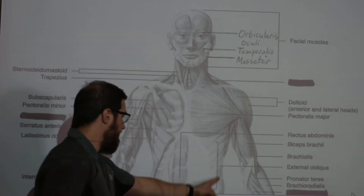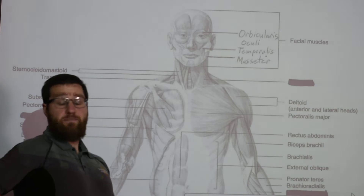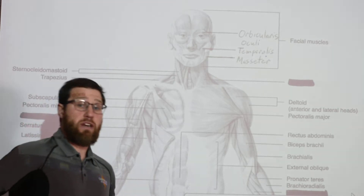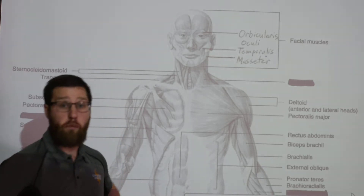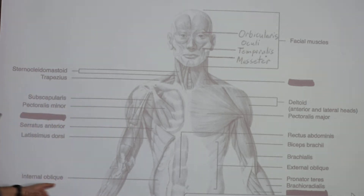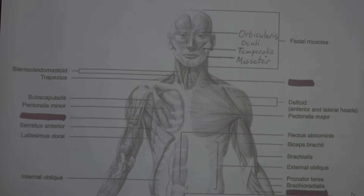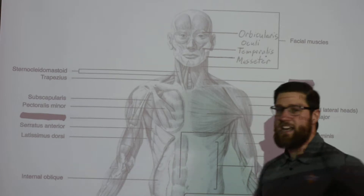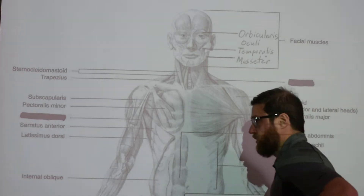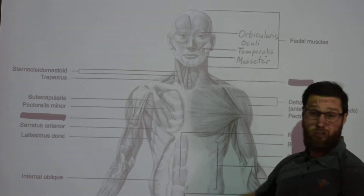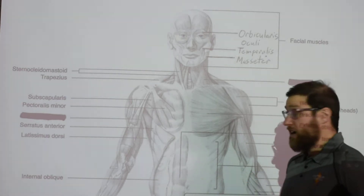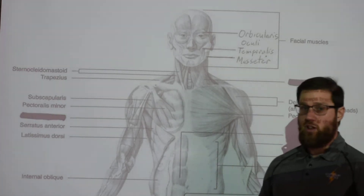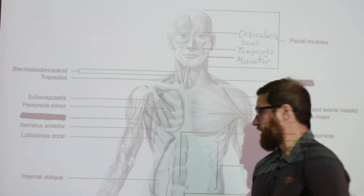Your external oblique is on the more lateral side of your torso and is involved in lateral bending — side to side movement. You also have your internal oblique, which is also involved in lateral bending but additionally handles rotational movement at the torso. The internal oblique is deeper, the external oblique is more superficial, and the rectus abdominis is the only one strictly on the very anterior side of your torso.